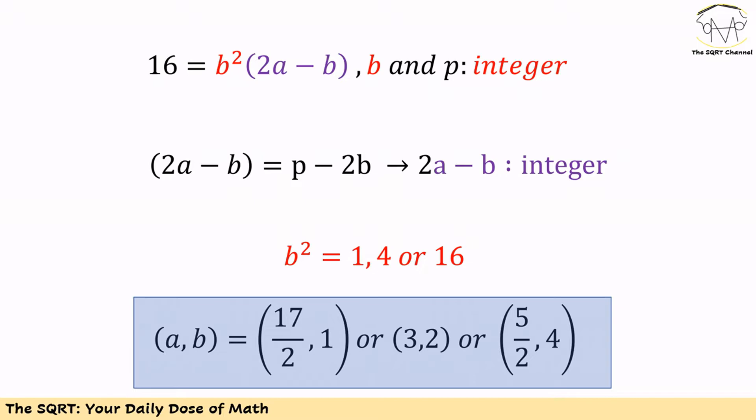On the left hand side we have 16, on the right hand side we have b squared times 2a minus b. We showed that b squared and 2a minus b should be integers. So b squared should be a perfect square - it can be 1, 4, or 16. If we solve for each case...